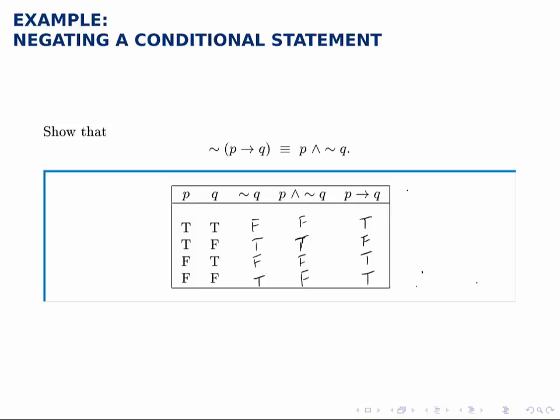We haven't built a column for not P implies Q, but notice that if we did it would be exactly identical to P and not Q, because by negating P implies Q we'd get false, true, false, false.